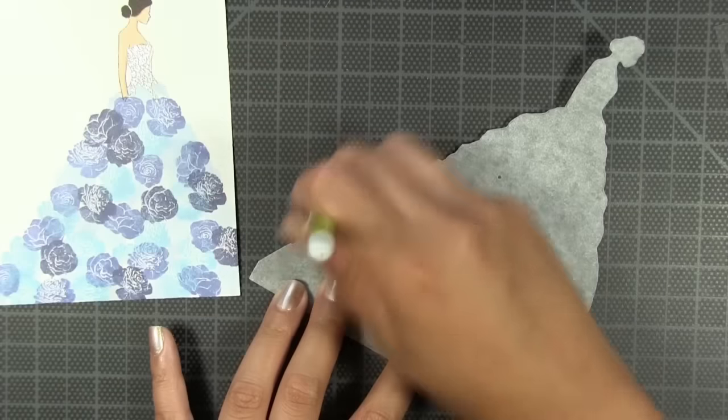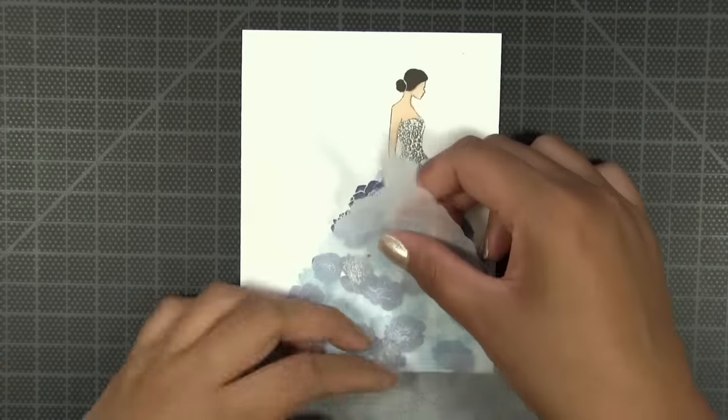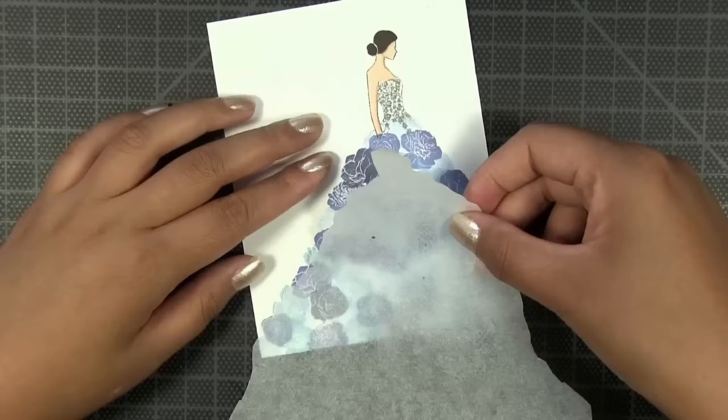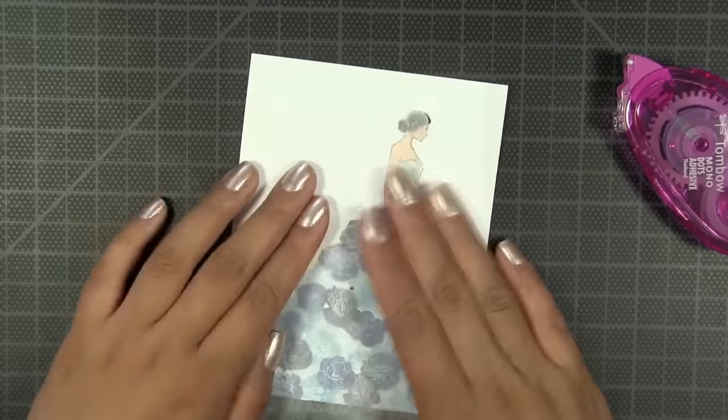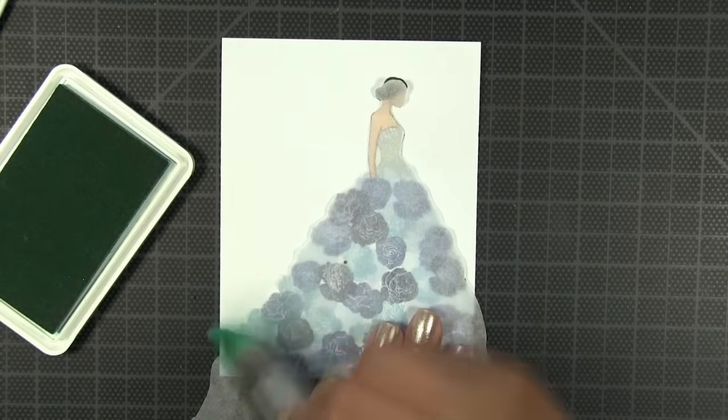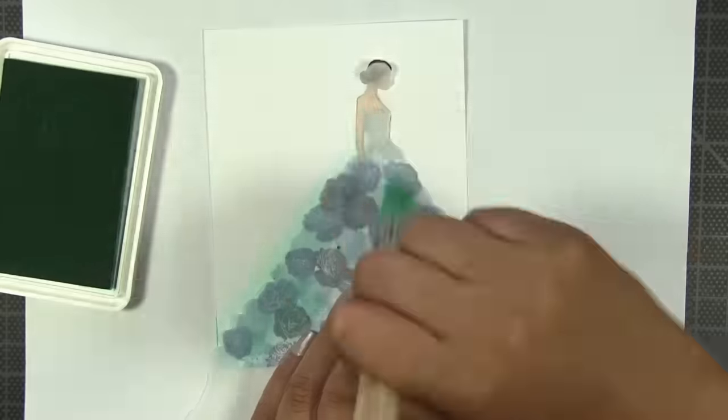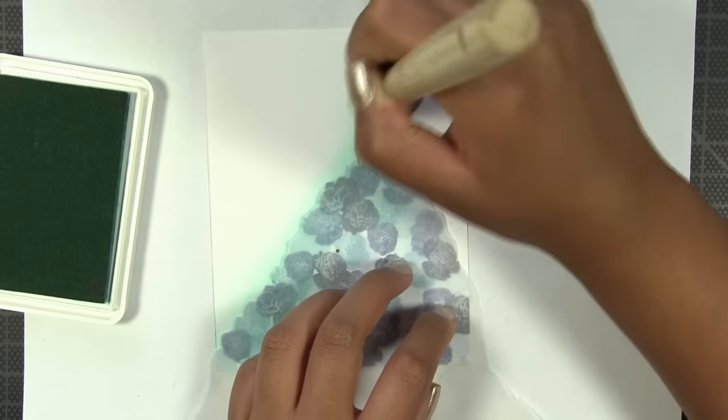Then I'm going to temporarily adhere it onto my stamped image, but before you adhere it onto your stamped image, erase all of the pencil lines on the tracing paper. Otherwise when you blend on from the mask onto the card panel, that's going to get some of that lead onto your card panel. Make sure you erase all of the pencil lines.